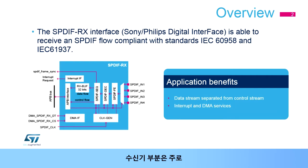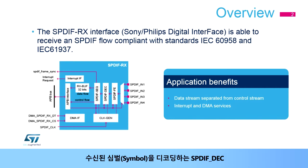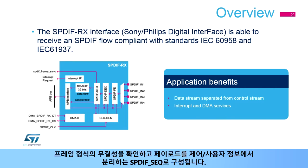The receiver part is mainly composed of the SPDIF-FE, which performs the sampling, the filtering, and the edge detection of the incoming stream; the SPDIF-DEC, which decodes the received symbols; and the SPDIF-SEQ, which checks the frame format integrity and separates the payload from the control and user information.